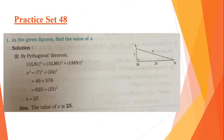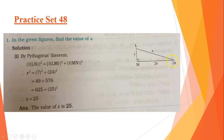Practice Set 48, Question number 1. In the given figures, find the value of x. This is a given figure of a right-angled triangle LMN. Angle LMN is 90 degrees, that means LN is the hypotenuse, LM is the height, and MN is the base.